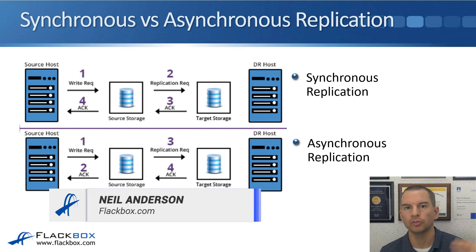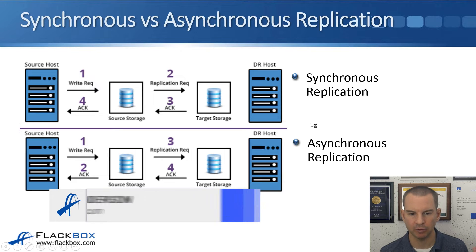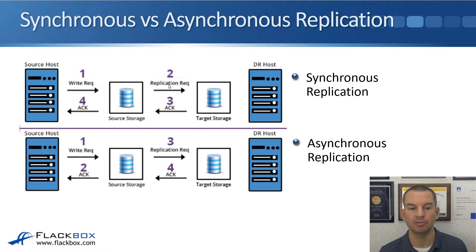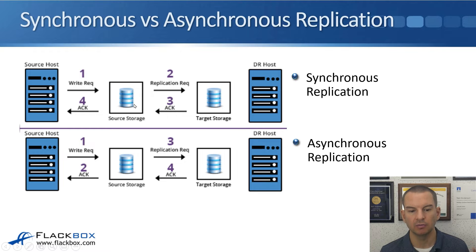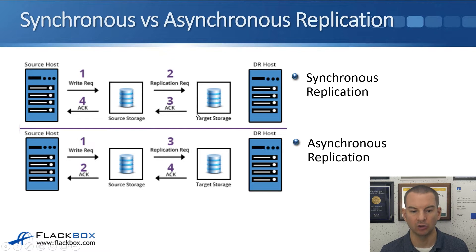The diagram shows the difference between synchronous and asynchronous replication. Starting with synchronous replication: the source host sends a write request to the source storage system. The source storage system then sends the write to the destination storage system. The destination storage sends an acknowledgement back to the source storage, and then the source storage sends the acknowledgement back to the client.